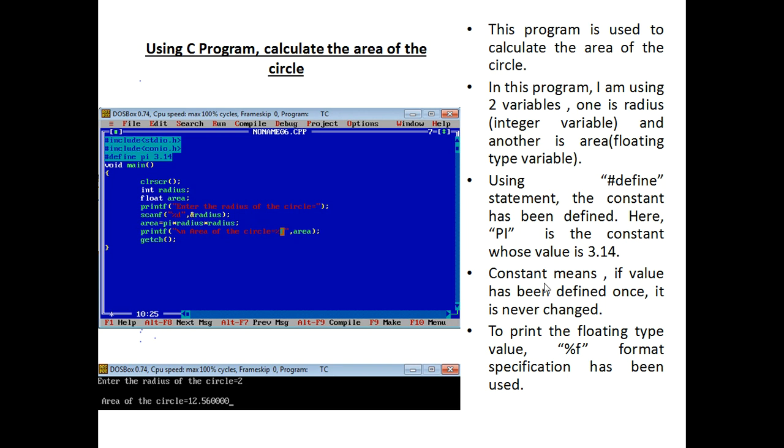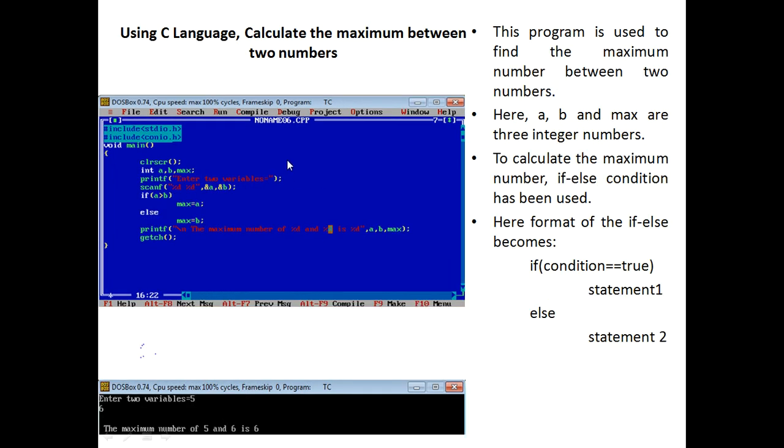We also know that what is constant? Constant means if a value has been defined once, it is never changed. To print the floating type values, the %f format specification has been used. This is the simple code to write in the C program, and this is the output. In this program you see that it is easy to code.